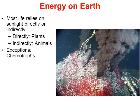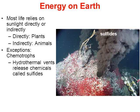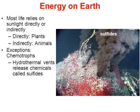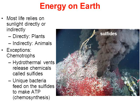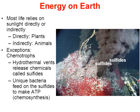Most life relies on the sun directly or indirectly, but the exceptions are chemotrophs. Here's a picture of an underwater hydrothermal vent with black smoke billowing out — a crack in the crust releasing gases from the mantle of the Earth. A gas called sulfides is released into the ocean water, and bacteria called chemotrophs feed on those sulfides to make their ATP. This process is called chemosynthesis, and the bacteria that do it are called chemotrophs.